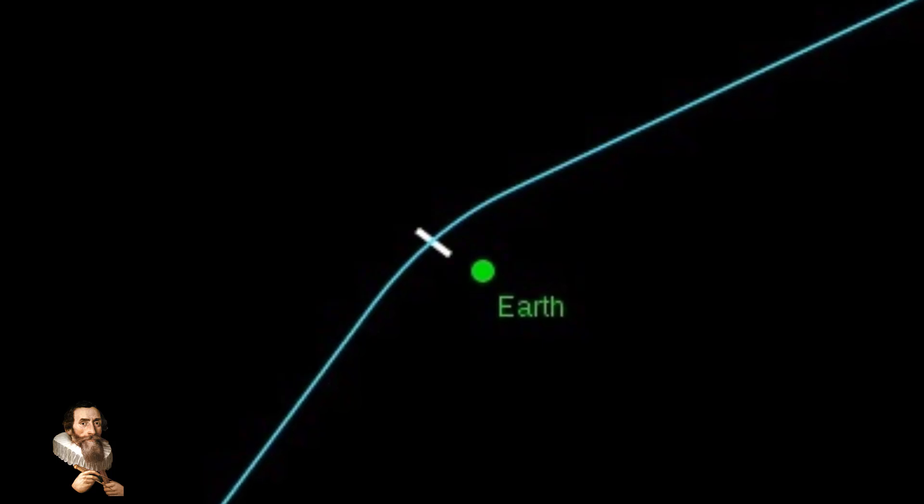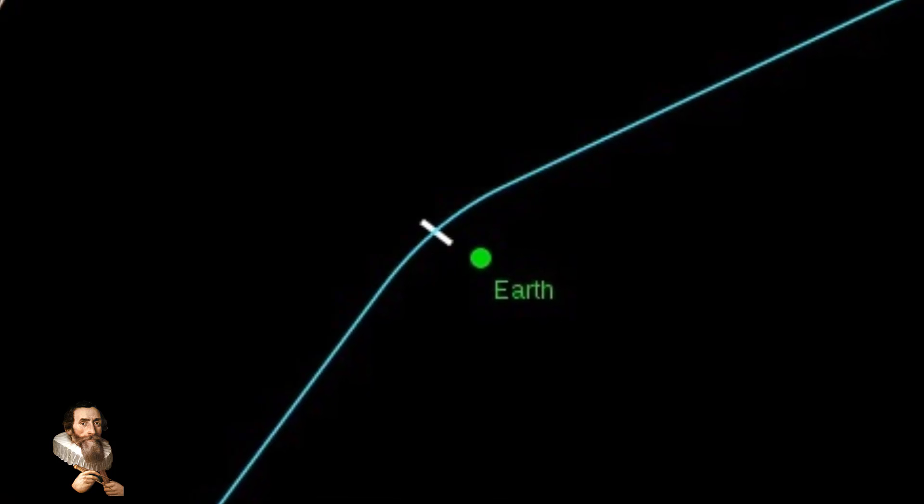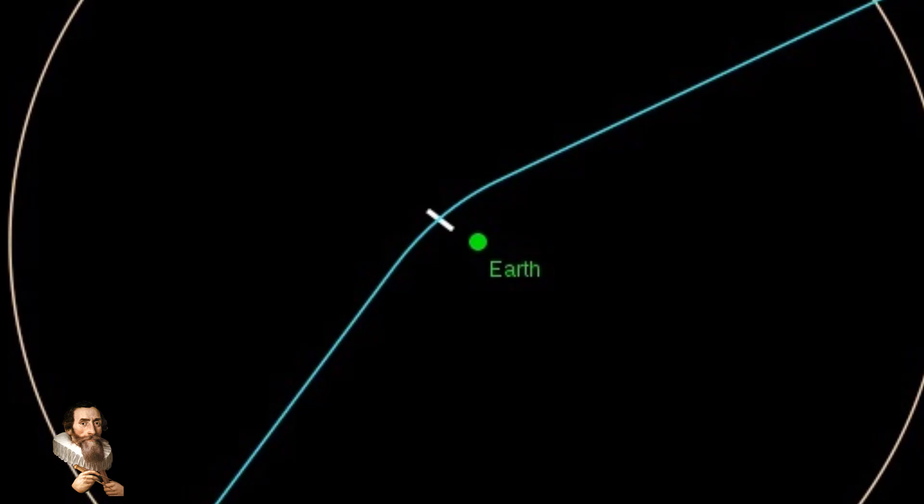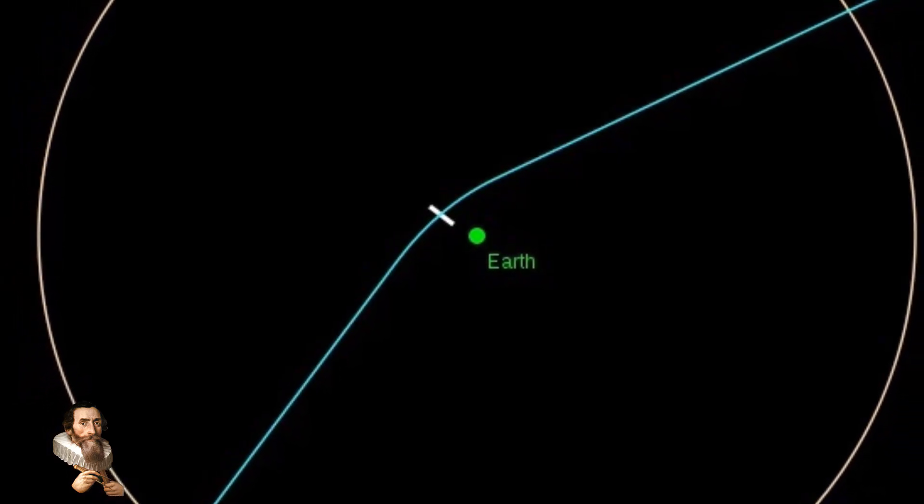We will not know for another three years if the asteroid known as Apophis has been perturbed in the asteroid belt. In 2027, we will learn if this asteroid's trajectory has been altered.